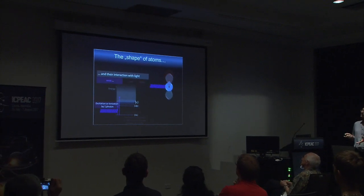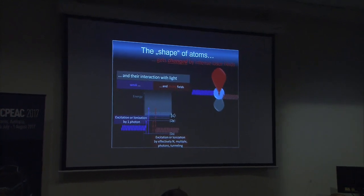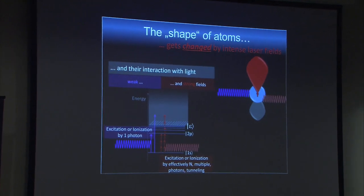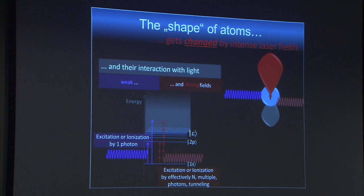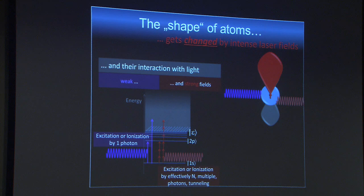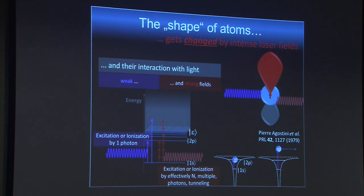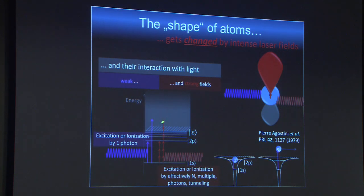When you go to a very intense light field, which you can make with lasers nowadays very easily, you apply field strengths that get close to the intra-atomic field strengths that hold the electrons in place. You will significantly change the structure — the real space structure and also the spectral structure. You can absorb several photons in this picture going from the ground state into the continuum, and even within the continuum keep absorbing photons, leading to above-threshold ionization. An early paper by Agostini in 1979 showed this above-threshold ionization.